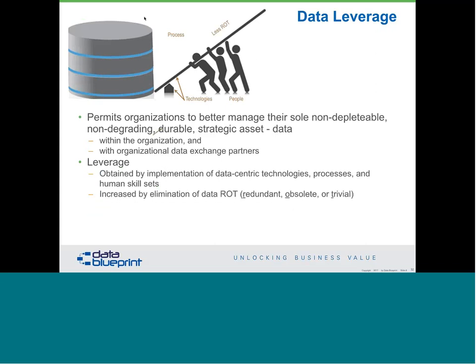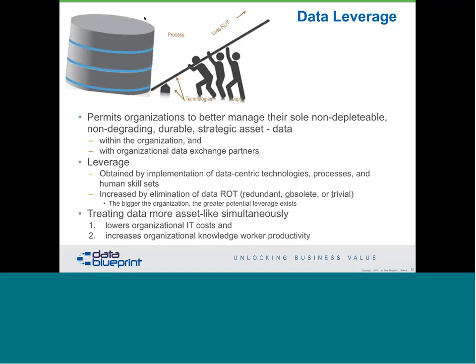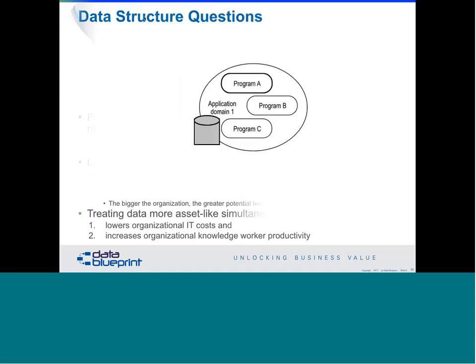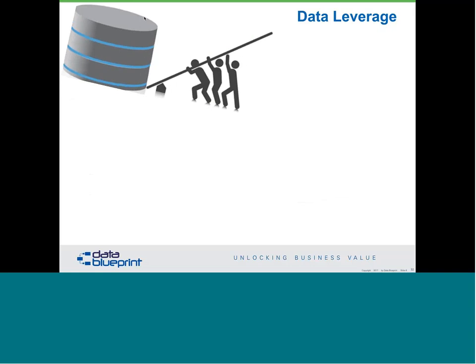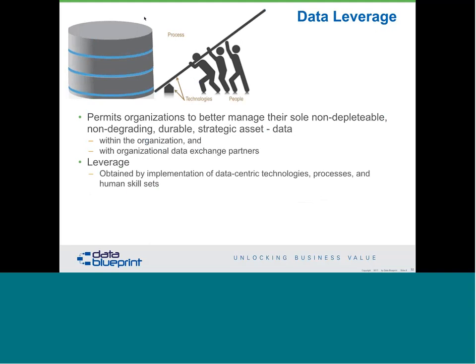Data is exactly the same way. We need to implement data-centric technologies, processes, and human skill sets. We also need to eliminate much of the ROT in our data. ROT data is data that is Redundant, Obsolete, or Trivial. Back to that picture of the hoarder's room — there's no telling what is redundant, obsolete, or trivial in there, but we can guarantee a lot of it is. Treating data more asset-like lowers IT costs and increases organizational knowledge worker productivity. I tend to define asset as something that's used to generate revenue — and too few organizations look at their data that way. And of course, if it's ROT, it's hard to do any of it.